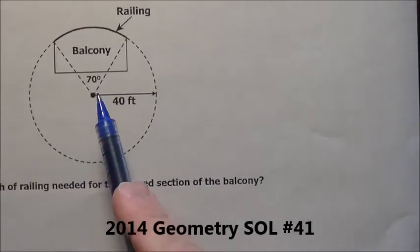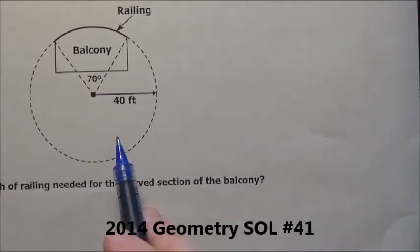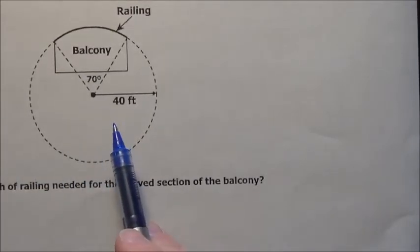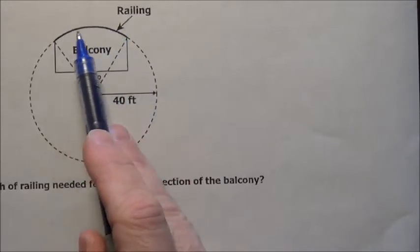Here's problem 41. I've zoomed in on the picture to help us see this. It says an architect used this diagram to design a curved balcony. So this is going to be curved right here.